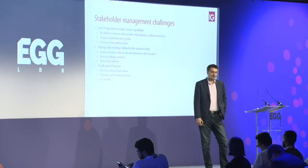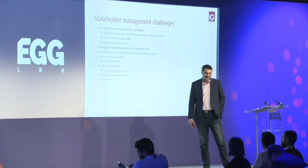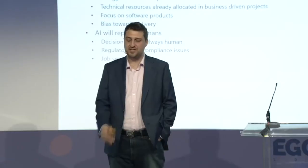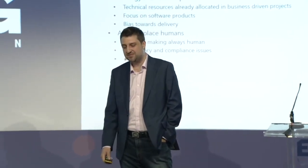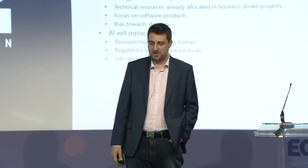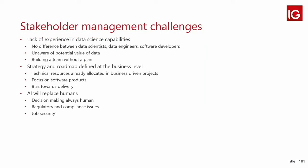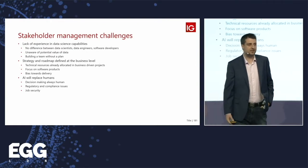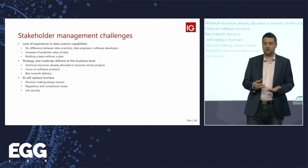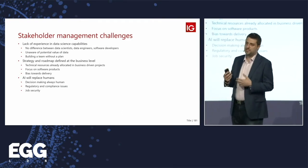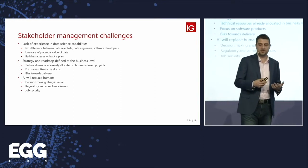So what kind of challenges do those different stakeholder types create? There are quite a lot. We can roughly group them into three types. First, a lack of experience in data science capabilities: in many companies, senior management doesn't really understand or appreciate the difference between a data scientist, a data engineer, a software developer, a DevOps engineer — they're all seen as computer people writing code. From a data scientist's perspective, that causes frustration when they're given engineering work or asked to build reports.